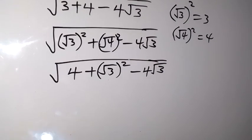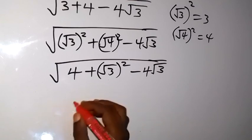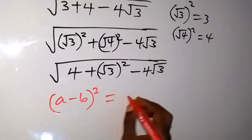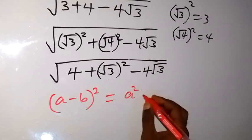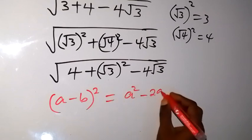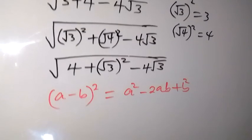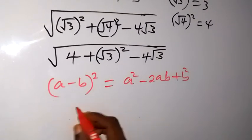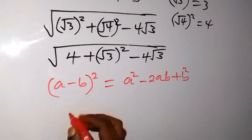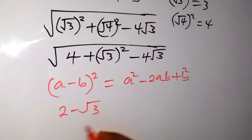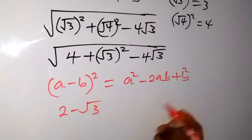From there, if I compare it with an identity when we have a minus b squared. A minus b squared, this one will give us a squared minus 2ab plus b squared. And from here we say our a here is 2 now. And when we put 2 here, we can see that we have 2 minus root 3. Here a is 2 and the root 3 is b.